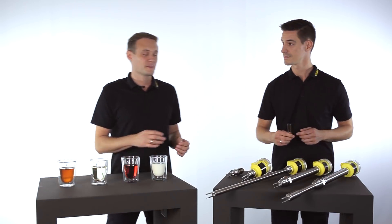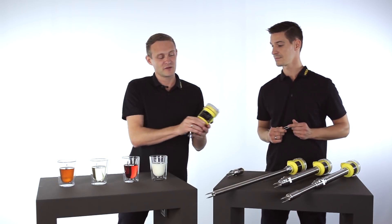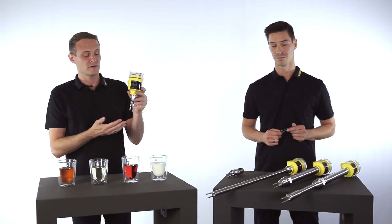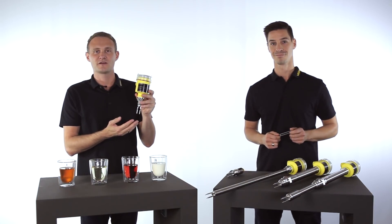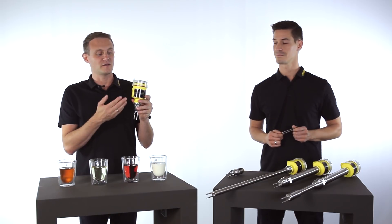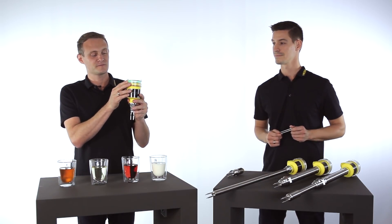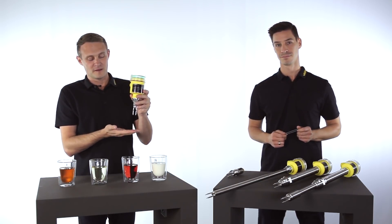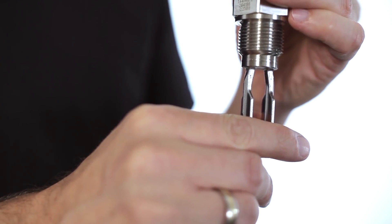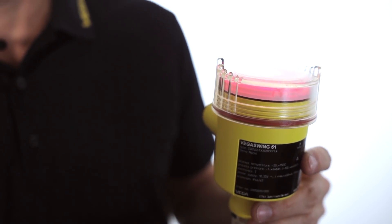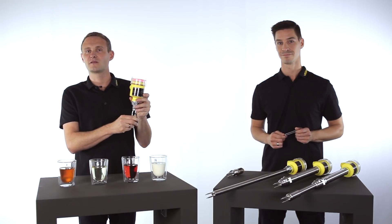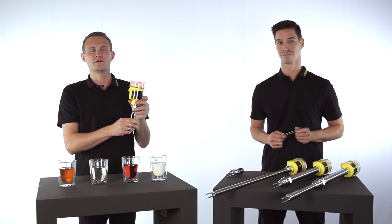The principle for vibration level switches is the same. Here a fork is stimulated to its resonance frequency, but not manually by hand. It's done by the integrated electronics. If a liquid medium touches the fork, the frequency is damped and the integrated electronics evaluates this, for example stopping the pump to prevent overfilling the tank.